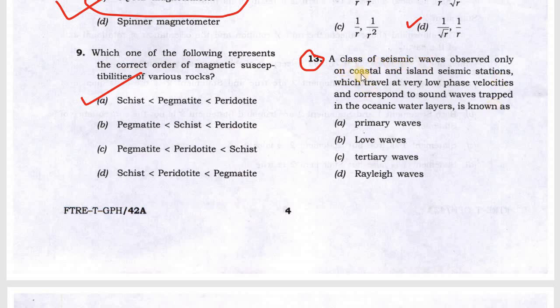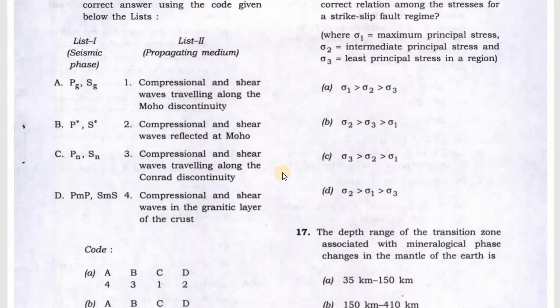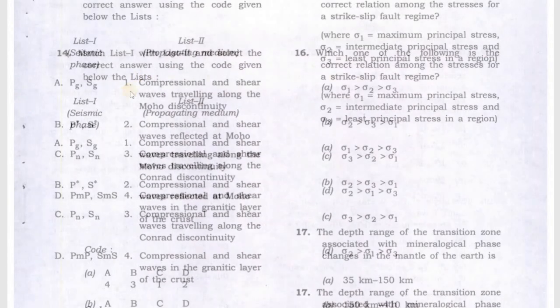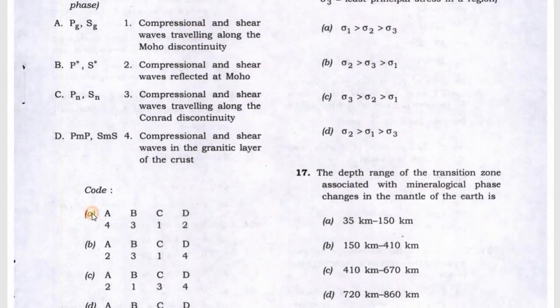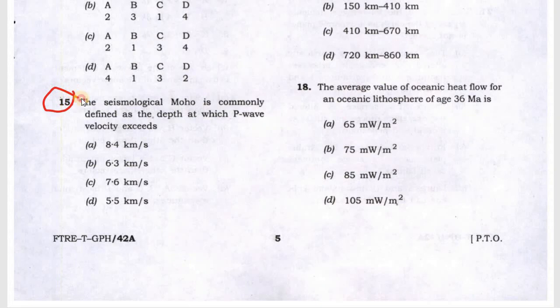The next question is asking about a class of seismic waves observed only on coastal and island seismic stations, which travel at very low phase velocity and correspond to sound waves trapped in the oceanic water layer. This is known as the tertiary wave. Question 14 answer will be A.